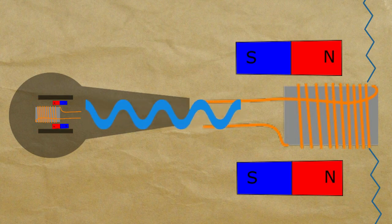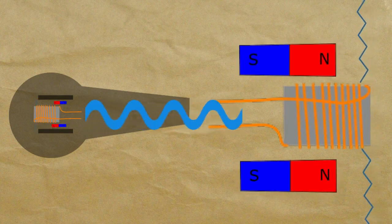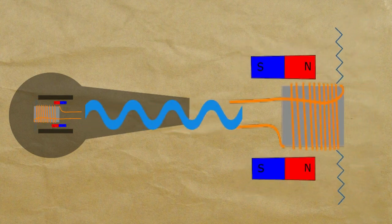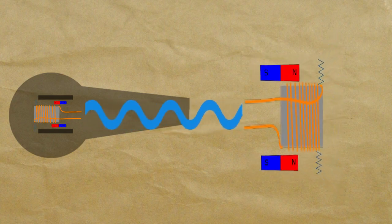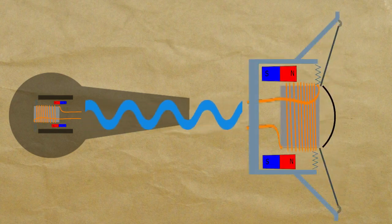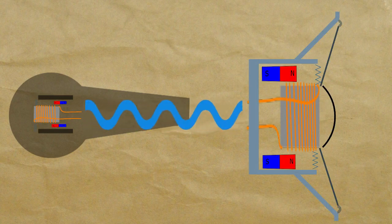For a speaker, high current is needed to move the coil, so heavier wire is used. And a large cone is attached to the end of the coil to function almost like a paddle to move more air with each stroke of the coil.